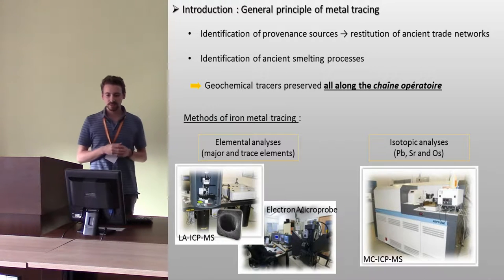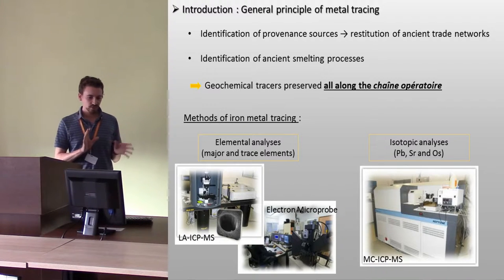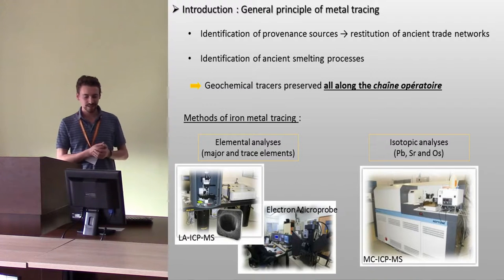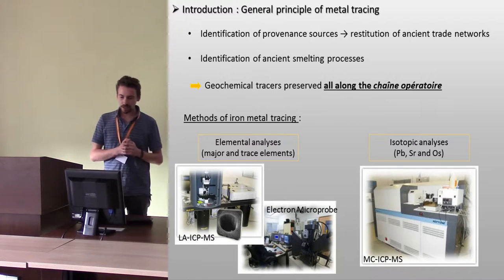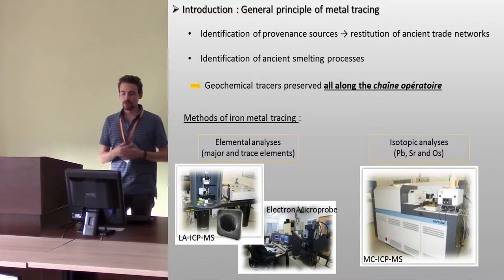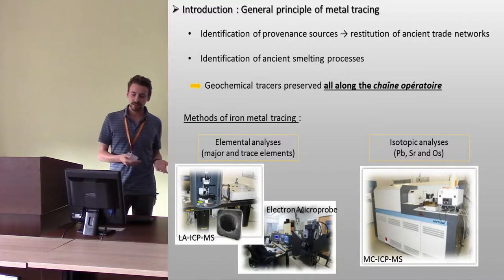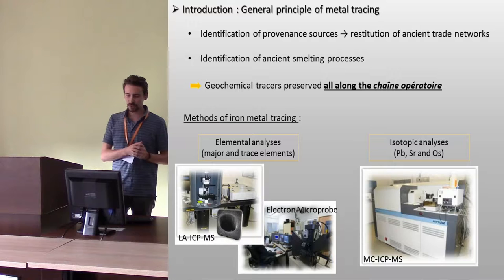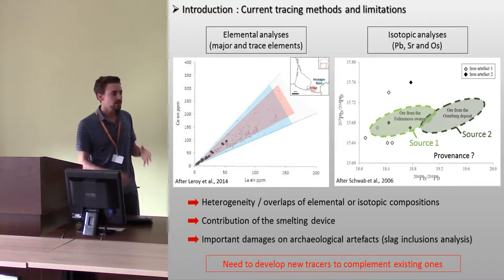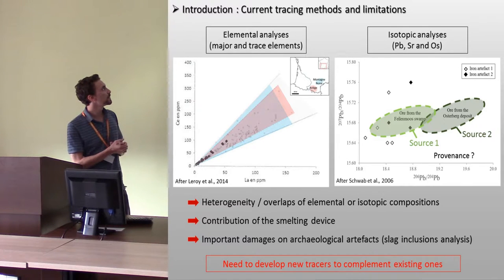Concerning iron metals, we can distinguish two types of methods: elemental analysis of major and trace elements with electron microprobe analysis or laser ablation. And since the development of mass spectrometers with multi-collection, we can use isotopic analysis. Lead, neodymium, and osmium have been used to trace iron metals. However, most of these methods may show some limitations.